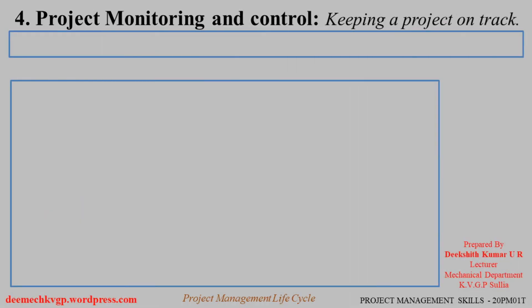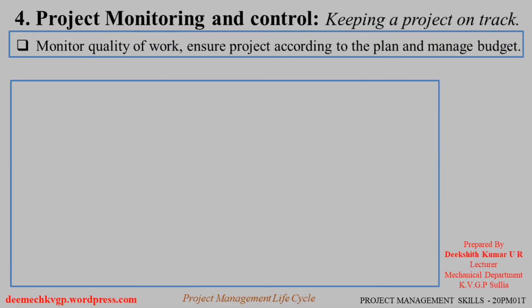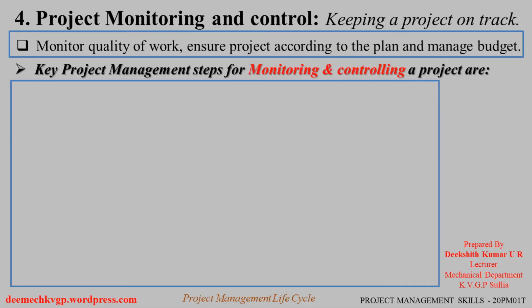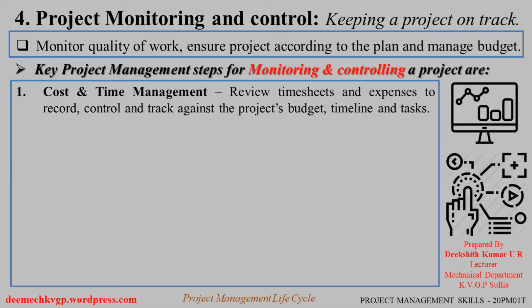The fourth phase is Project Monitoring and Control — keeping the project on track by monitoring quality of work, ensuring the project proceeds according to plan, and managing the budget. Key steps: Cost and time management — review timesheets and expenses to record, control, and track against the project's budget, timeline, and tasks. Compare the cost and time plan against ongoing work to avoid any deviation.